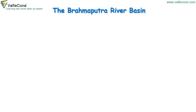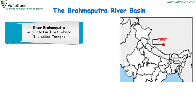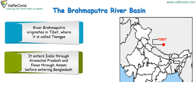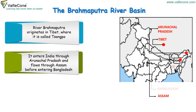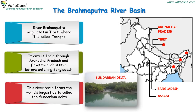The Brahmaputra River Basin: River Brahmaputra originates in Tibet, where it is called Sangpo. It enters India through Arunachal Pradesh and flows through Assam before entering Bangladesh. This river basin forms the world's largest delta, called the Sundarbhan Delta.